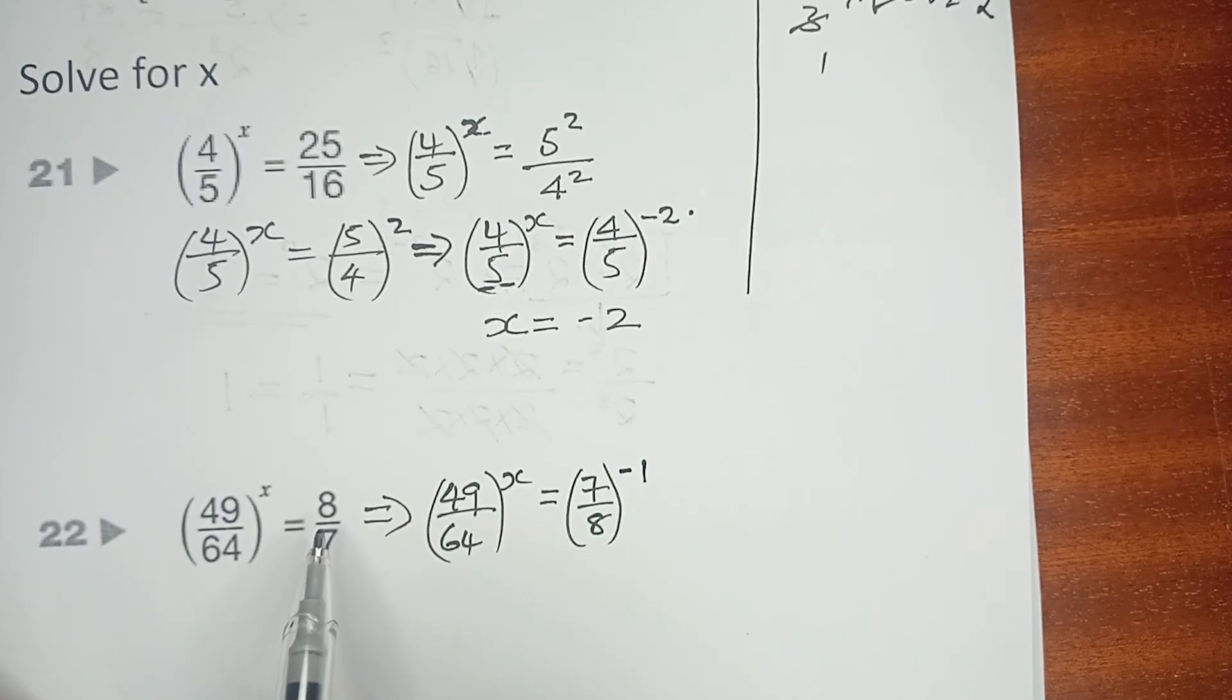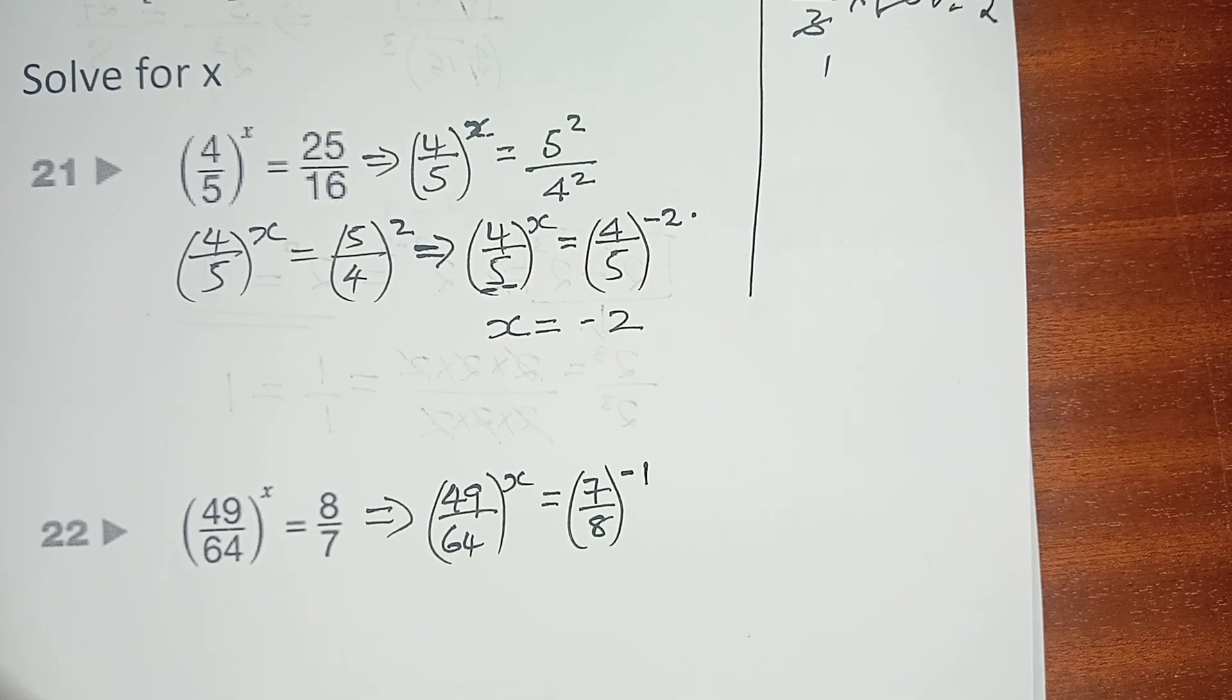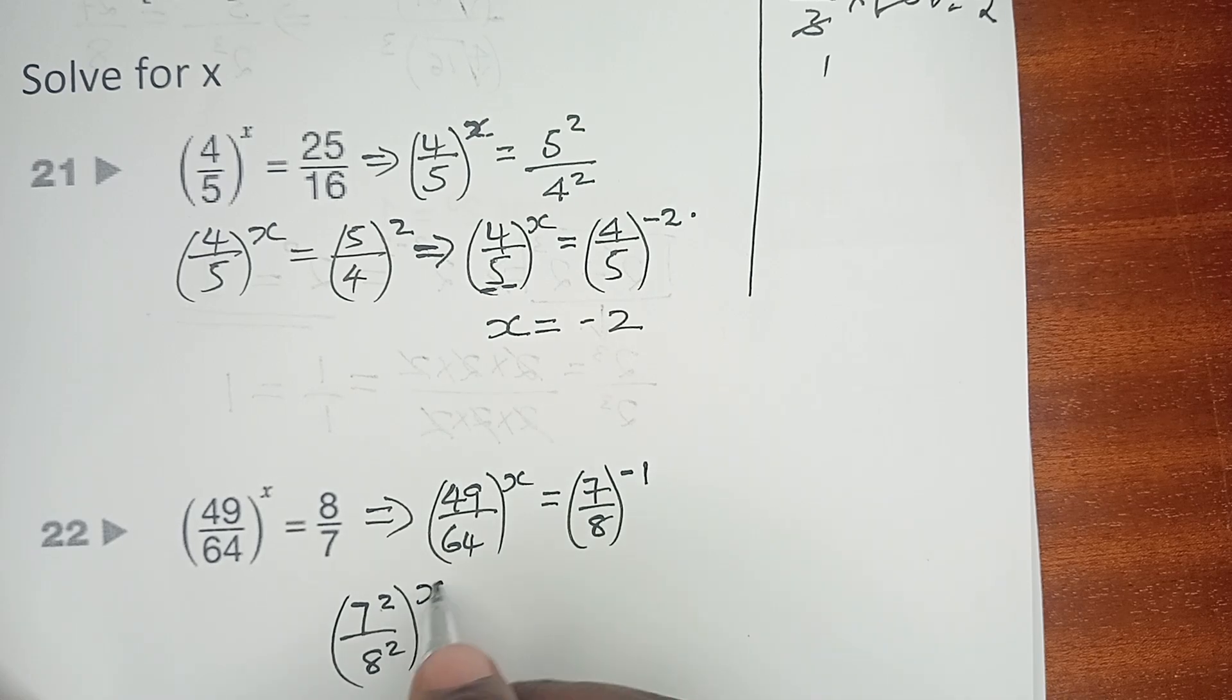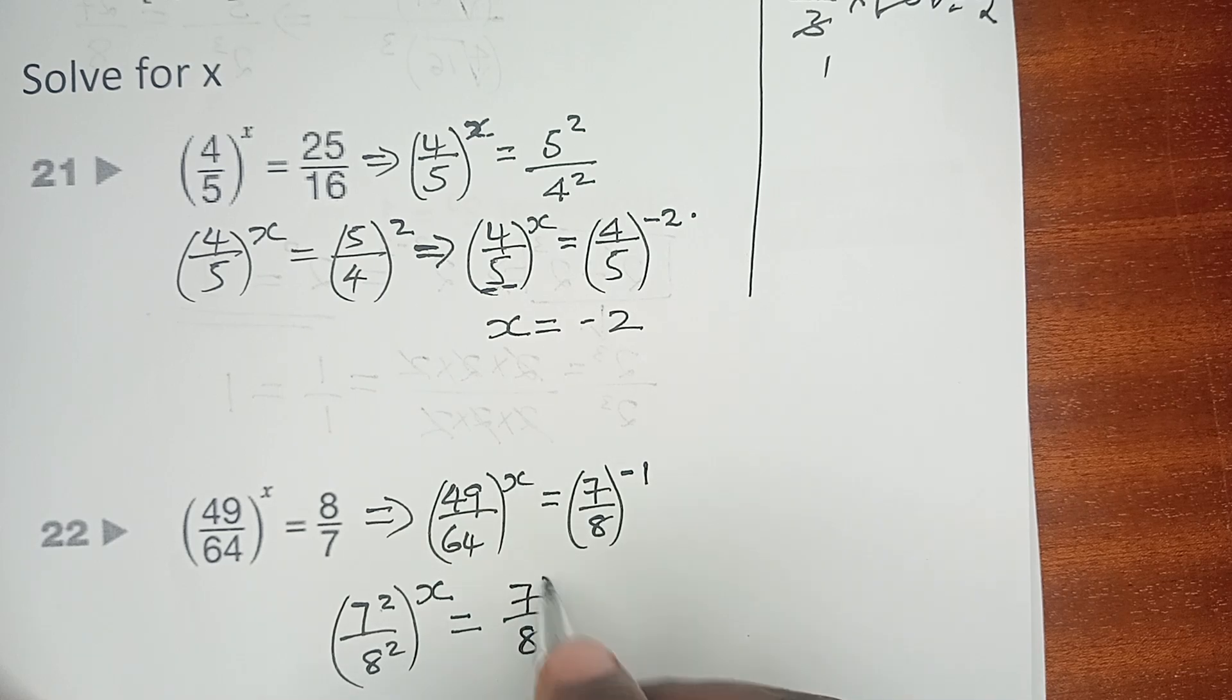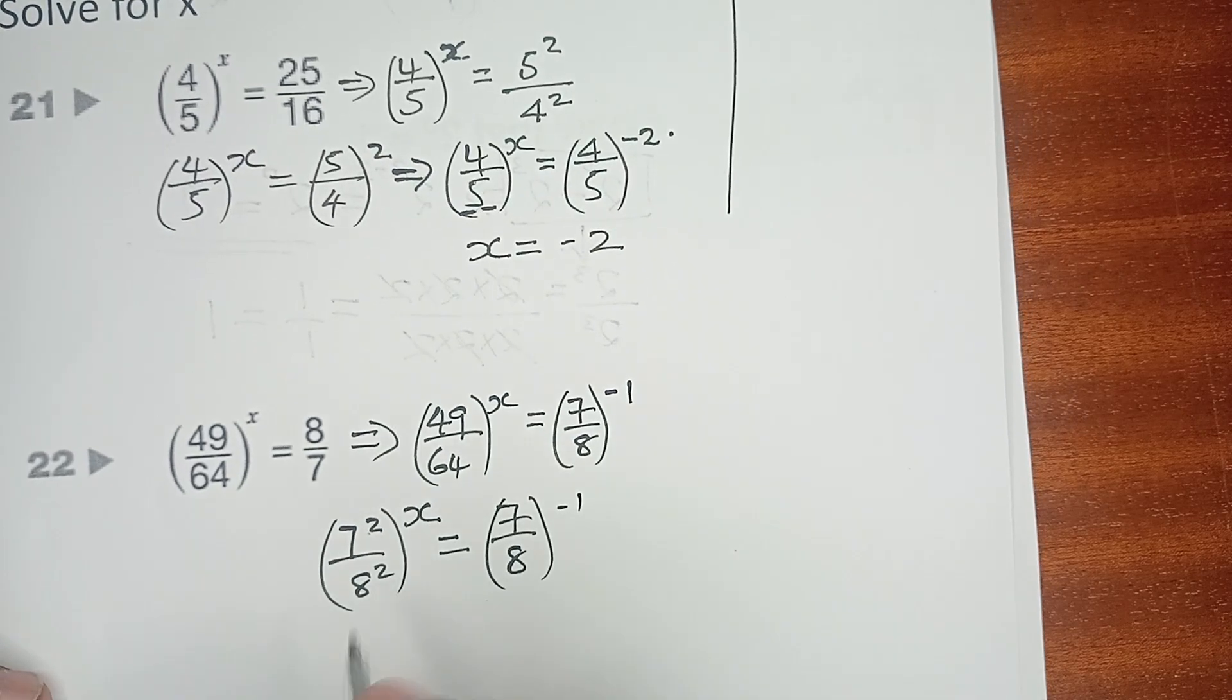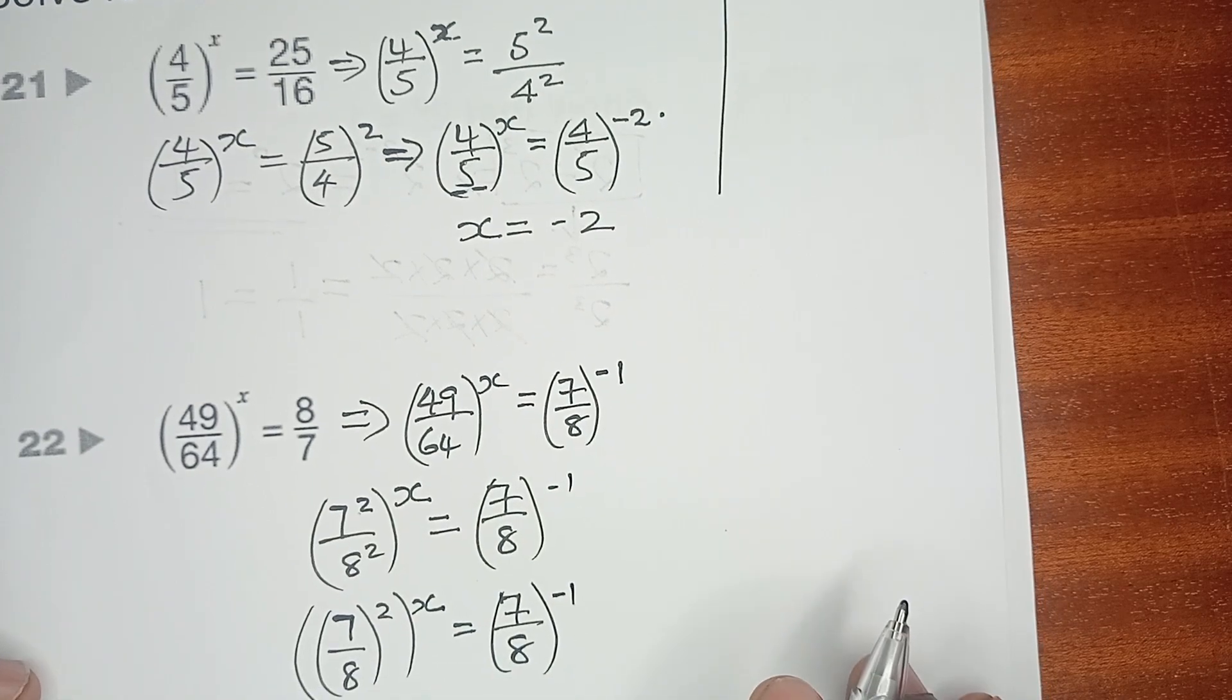Now that the power here was positive 1, the new power is -1. In this case, we can write 49 as 7 squared over 8 squared raised to power X, which equals (7/8)^-1. Incidentally, this is going to be (7/8) raised to power 2, upon which is again raised to power X, equals (7/8)^-1.